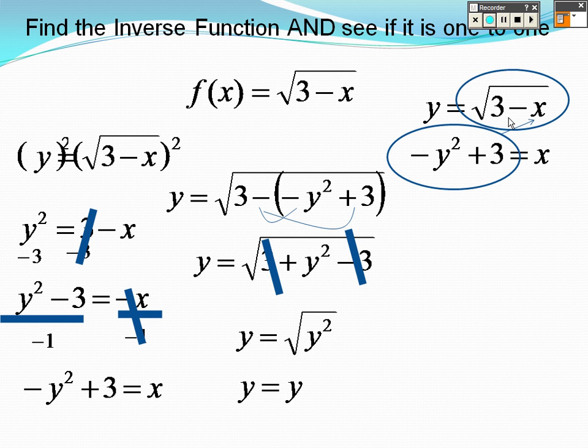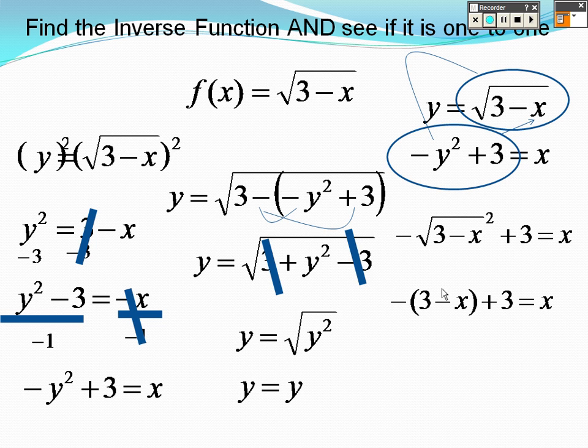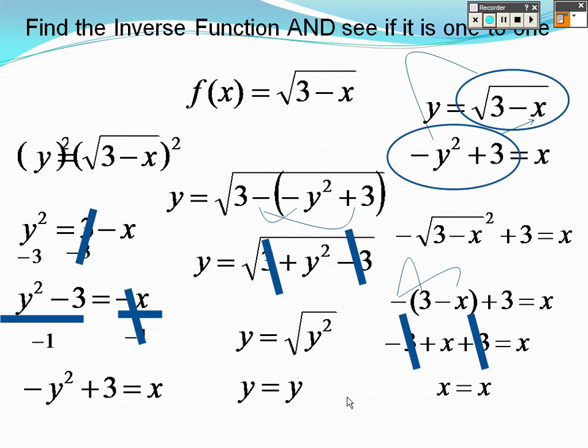Then I'm going to take this and plug that all in for y. Square root of a square cancels. So I really have a negative times 3 minus x. So I take that negative through. The negative and the positive 3 cancel. So I get x equals x.